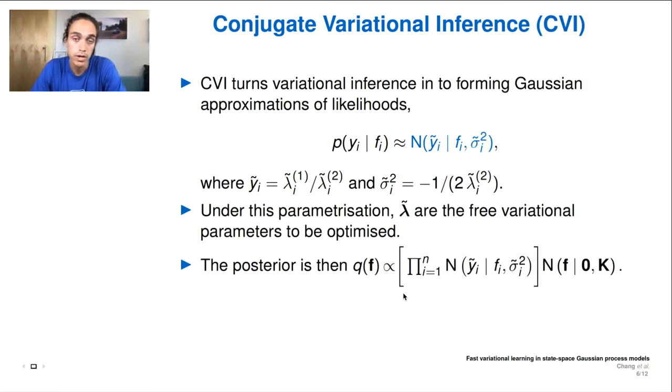But if we want the posterior, we can perform a conjugate computation. So we use the approximate likelihoods and the prior, and we can easily recover the posterior as a type of GP regression style problem.